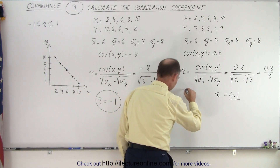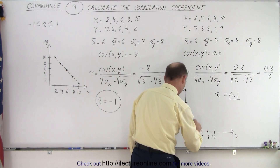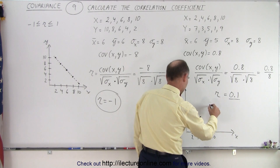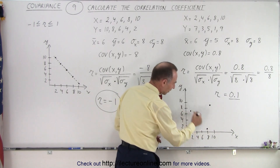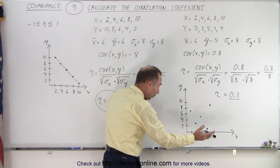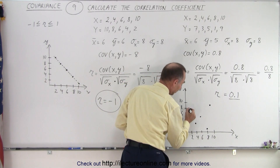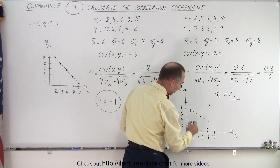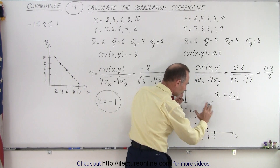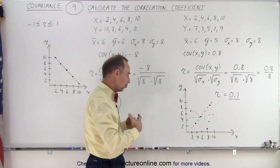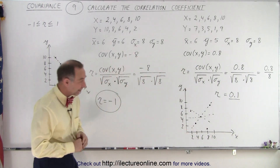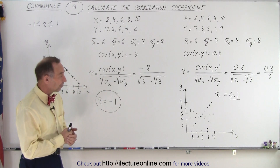Now if we do the same for the first data set — when x is 2, y is 7, and when x is 10, y is 9. Notice there's no way to draw a straight line and have all the points close to that line. If I draw a line like this, three points are far away. If I draw it another way, those points are far from the line. Since I cannot draw a straight line where all five points are close to it, there's not going to be a strong correlation between the two data sets. With a correlation coefficient R of 0.1, it indicates yes, not a strong correlation.